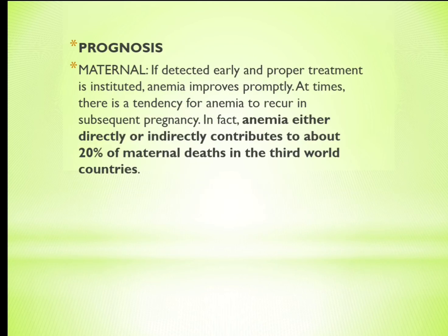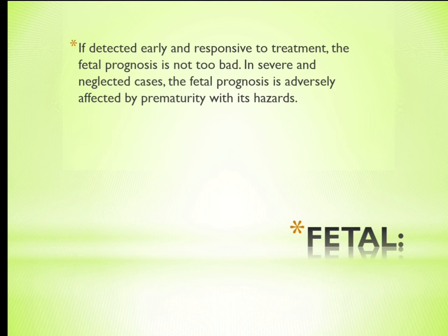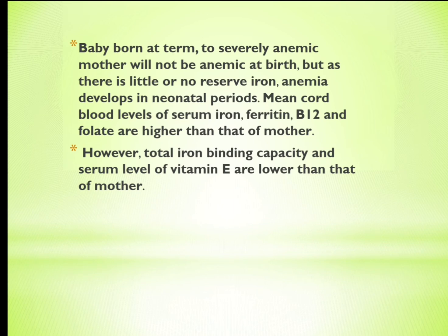Prognosis — Maternal: if detected early and proper treatment is instituted, anemia improves promptly. There is a tendency for anemia to recur in subsequent pregnancies. Anemia directly or indirectly contributes to about 20% of maternal deaths in third world countries. Fetal: if detected early and responsive to treatment, fetal prognosis is not too bad. In severe and neglected cases, fetal prognosis is adversely affected by prematurity. The baby born to a severely anemic mother will not be anemic at birth, but as iron stores are low, anemia develops in the neonatal period. Cord blood levels of serum iron, ferritin, vitamin B12, and folate are higher in the neonate than in the mother; however, total iron binding capacity and serum vitamin E are lower than that of the mother.